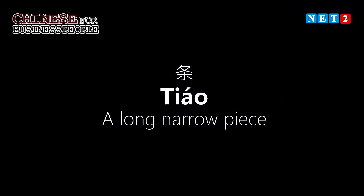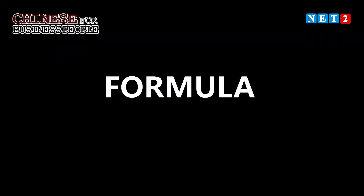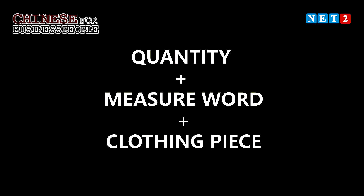Hello everybody, welcome again to another episode of Chinese for Business People. My name is Nana Kwame Jinfi. In the previous episode we mentioned the measure word 'tiao', and we said that this measure word is used to classify items that are a long narrow piece. We also mentioned that the formula for mentioning quantities for objects is: the quantity plus the measure word plus the clothing item.